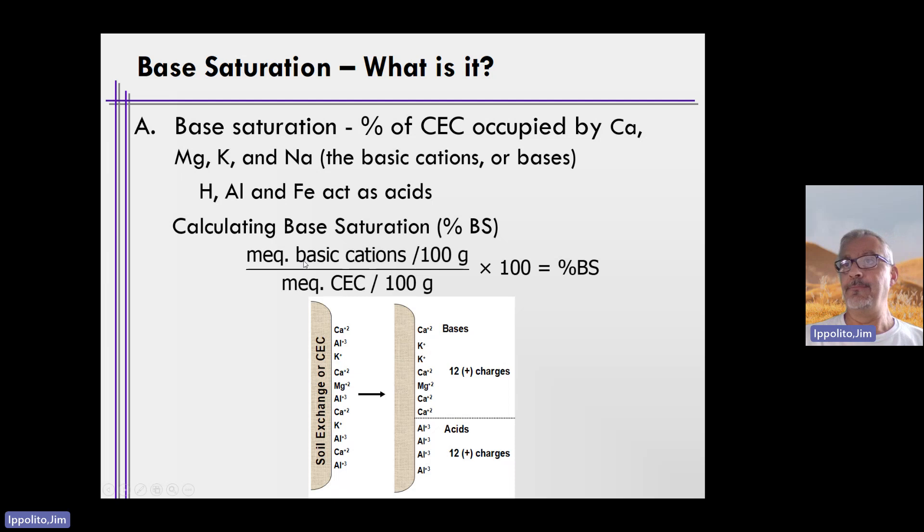So how do you calculate it? You calculate the milliequivalents of basic cations per 100 grams, and you divide that by the CEC, which is in milliequivalents per 100 grams, and you multiply that by 100 to determine percent BS, base saturation.